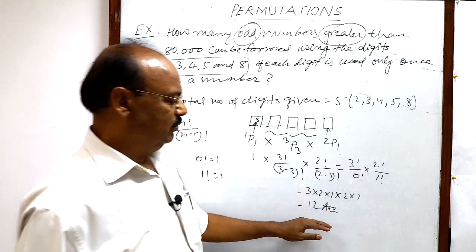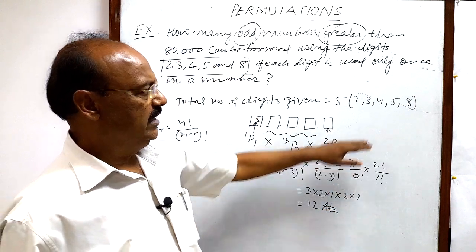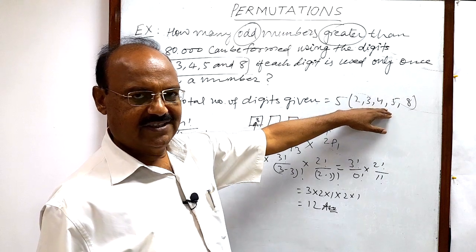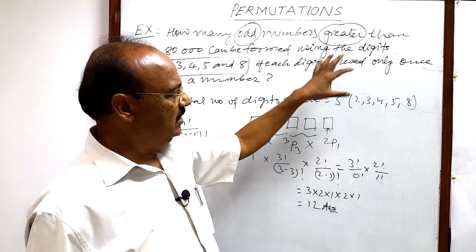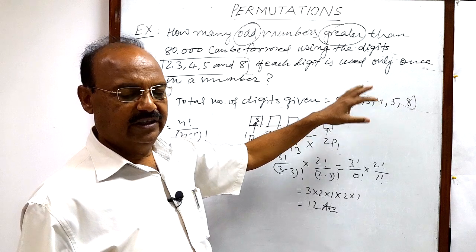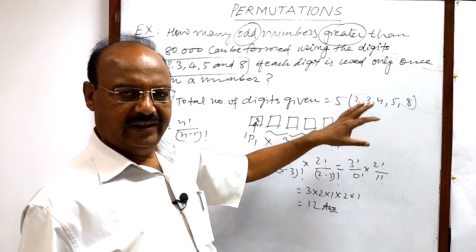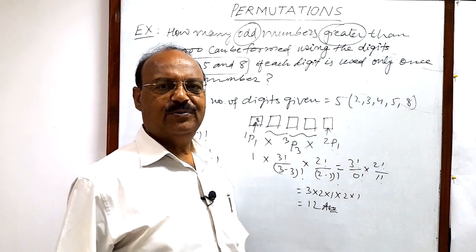12 such numbers can be formed with the help of these digits. So very simple, interesting question, little bit tricky. Hope you have understood well. Thank you very much for watching this video.